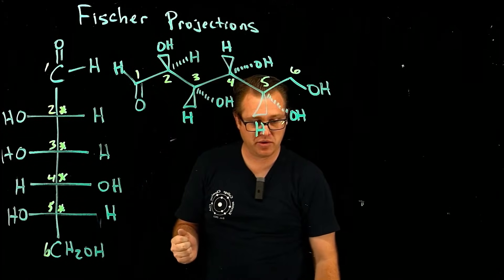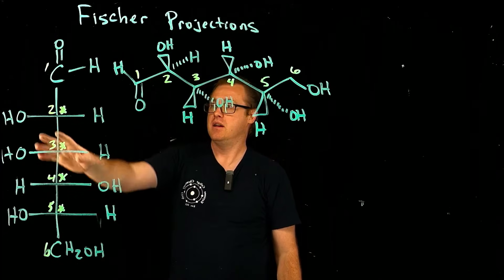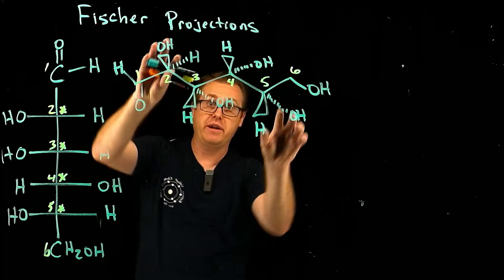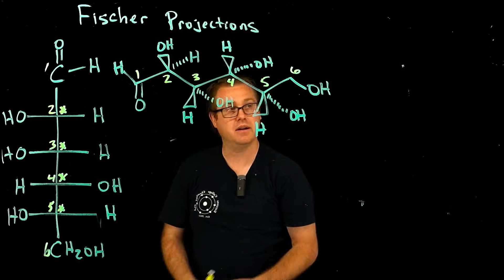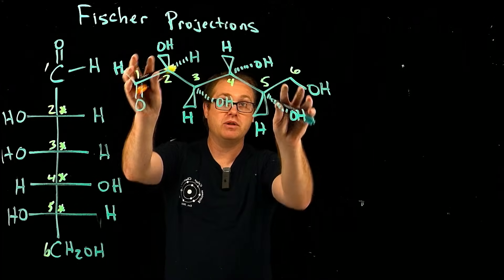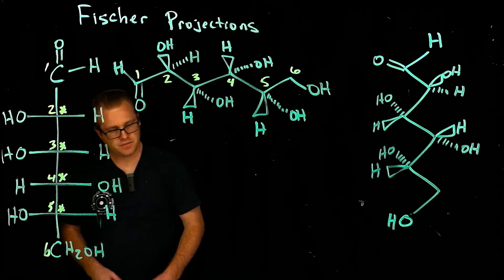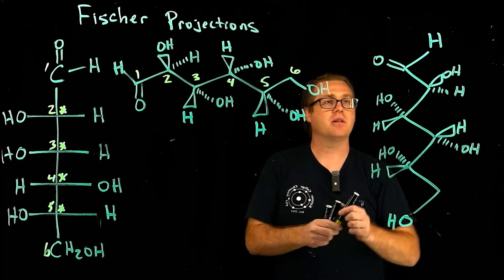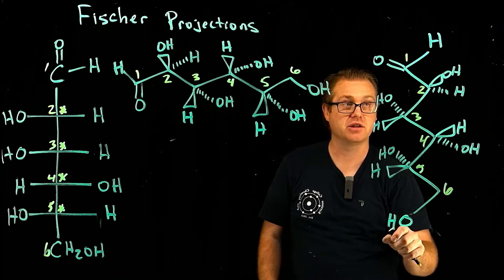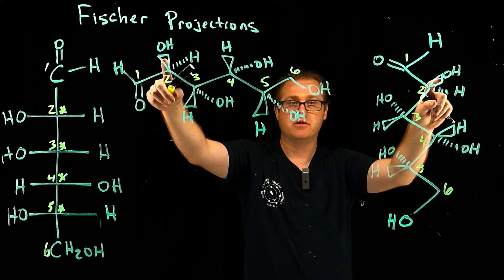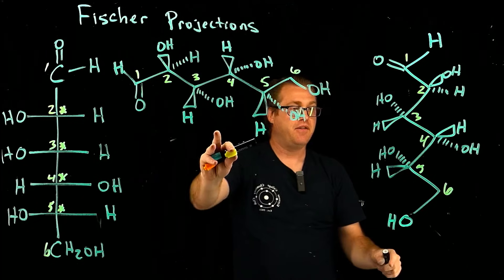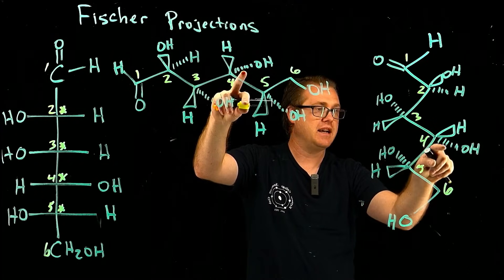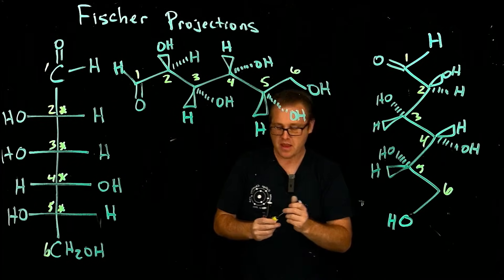Now I'll show you the tricks I use to figure out stereochemistry in the Fisher projection. The first thing you do is take the zigzag molecule and redraw it by rotating it 90 degrees. After rotating, we number the carbons again and confirm the stereochemistry has not changed — carbon two has a wedged hydroxyl, carbon three is a dashed OH, carbon four is dashed OH, carbon five is dashed. Everything has to match.